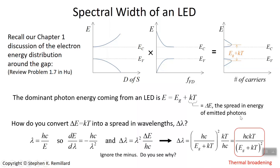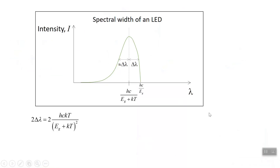Let's look at what the output spectrum should look like, given our pictures from the previous slide. This is the intensity coming out of an LED versus wavelength. The dominant wavelength is hc over E gap plus kT. You cannot have a wavelength longer than hc over E gap, that is, you can't have an energy smaller than E gap.